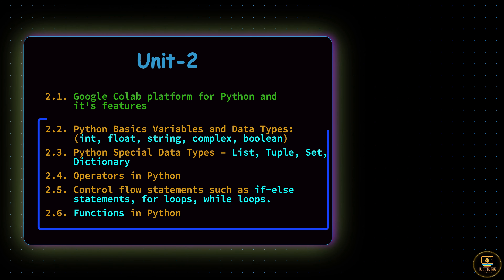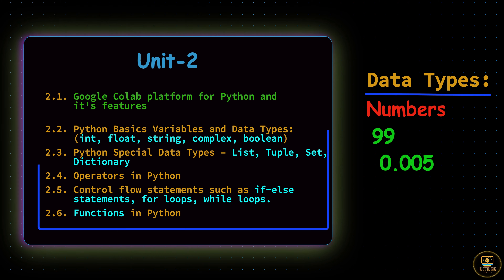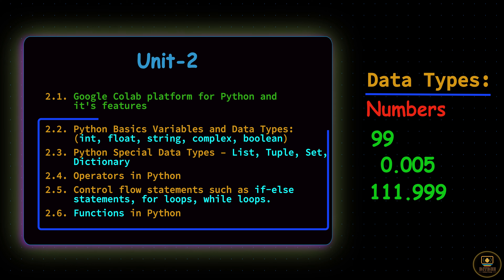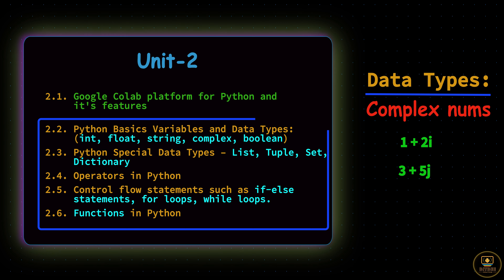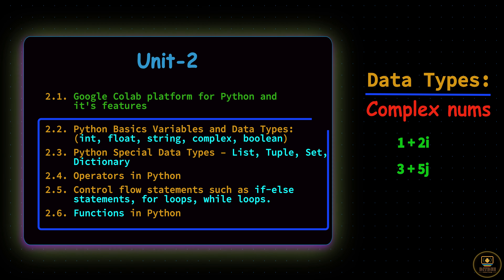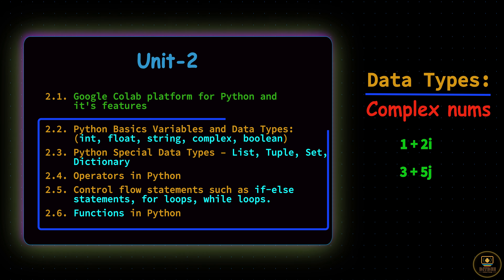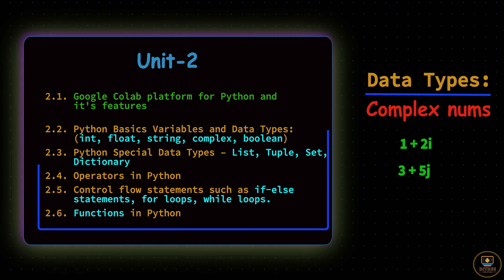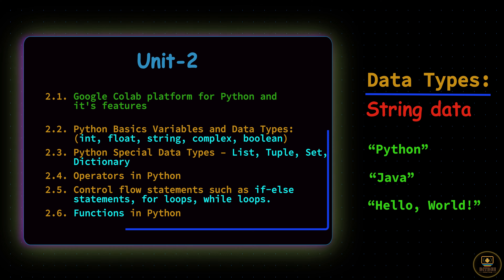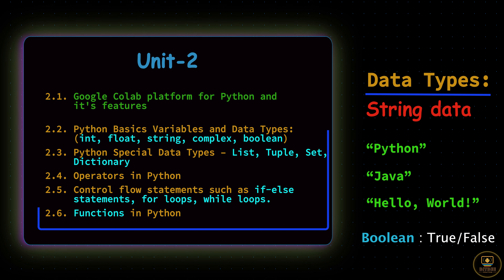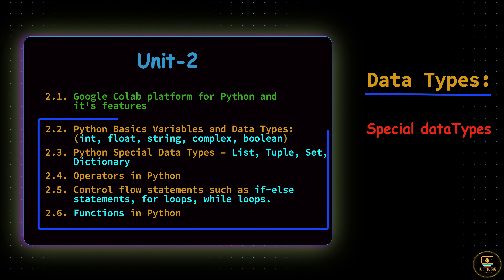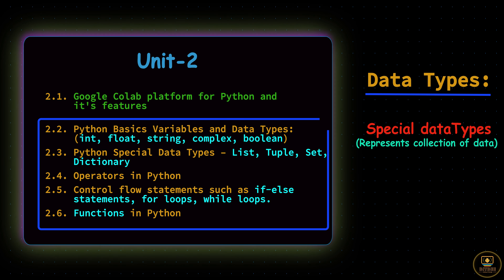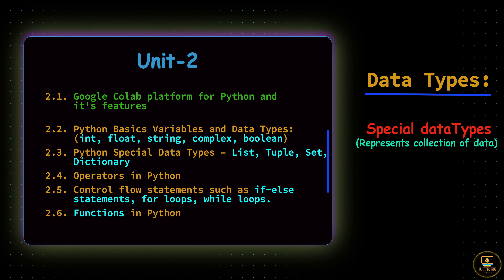Coming to the topics, first we are going to explore variables in Python — basically variables are used to store data. Then we'll see the different data types that Python supports, like integer numbers, floating or decimal numbers, and complex numbers. Python supports complex numbers through the complex data type, which is very important for machine learning. Complex numbers have both real and imaginary parts; examples are 1+2i or 3+5j.